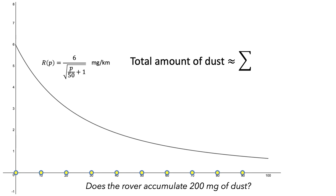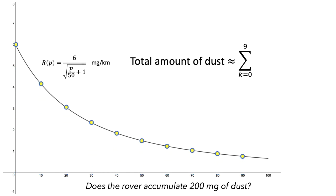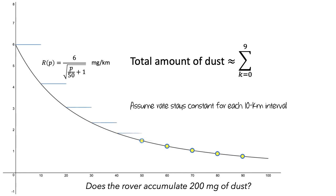Since we have 10 intervals and we're using a left sum, the bounds of the sum will be 0 and 9. Then we need to find the rate of dust accumulation. We can take these rates from the start of each interval, and then assume that the rate stays constant for each 10-kilometer interval, which will make our graph look like this. We're using the rate of accumulation at the start of each interval.